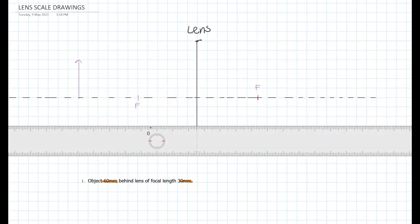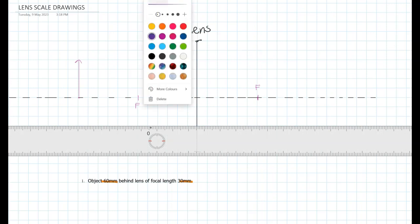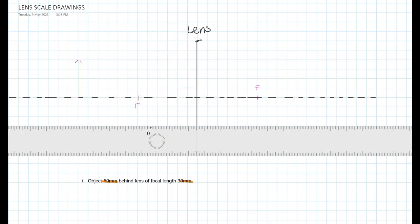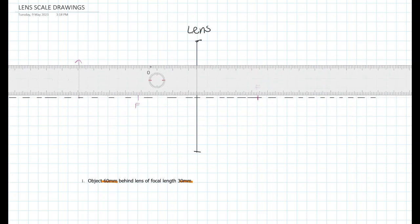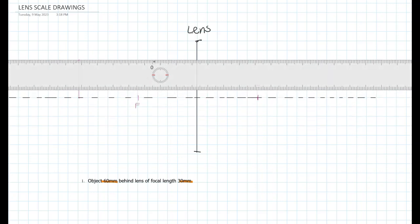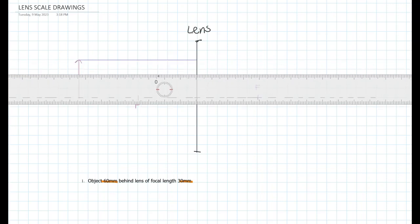I'm going to change color now and in a different color I'm going to draw my ray diagrams. So using my rules, a ray that is parallel to the axis hits the lens and then that ray passes through the focal point.